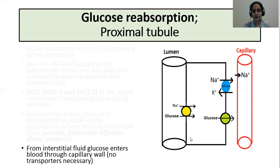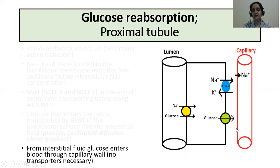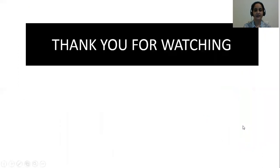So remember: for glucose reabsorption, secondary active transport is involved at the luminal membrane, facilitated diffusion is at the basolateral membrane, and passive uptake by bulk flow occurs at the peritubular capillaries. Thank you for watching.